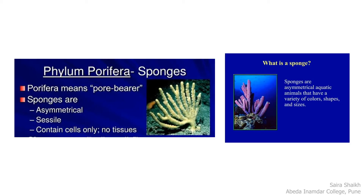Students, we studied in 11th standard about animal classification. Animals are broadly classified into chordates and non-chordates. Non-chordates are lower animals, which includes different phyla. Sponges are the animals present in the phylum Porifera. They are aquatic, asymmetrical, and have a porous body, and that is why the phyla is called phylum Porifera.